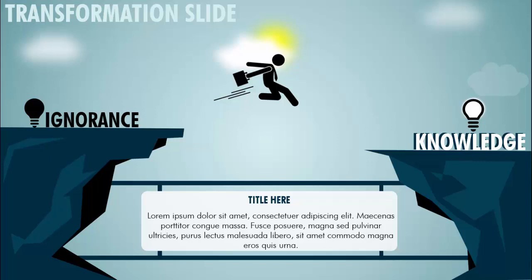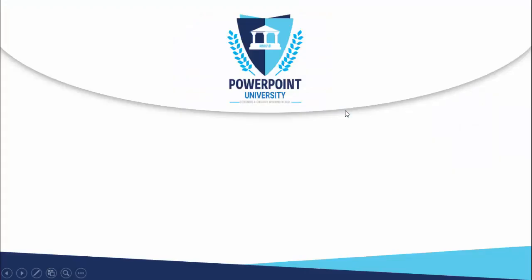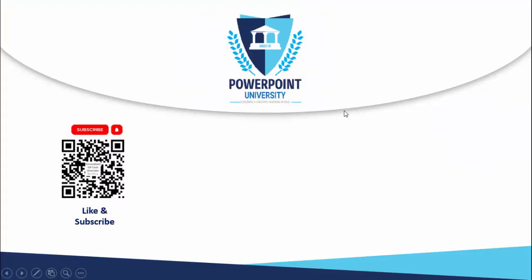In today's tutorial I'm going to show you how to create this transformation slide. I have drawn two clips here, and on one side I've added the word 'ignorance' — you can replace this word with any of your own. On this side I have put 'knowledge', and a businessman is jumping from the ignorant side towards the knowledge side. At the bottom you can add a title and some detailed text.